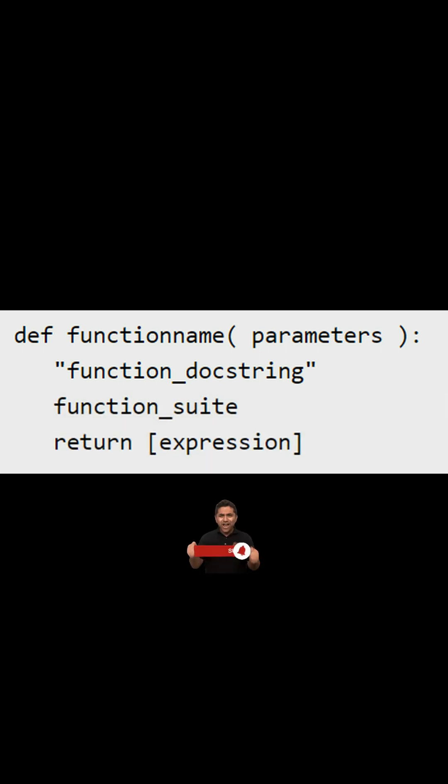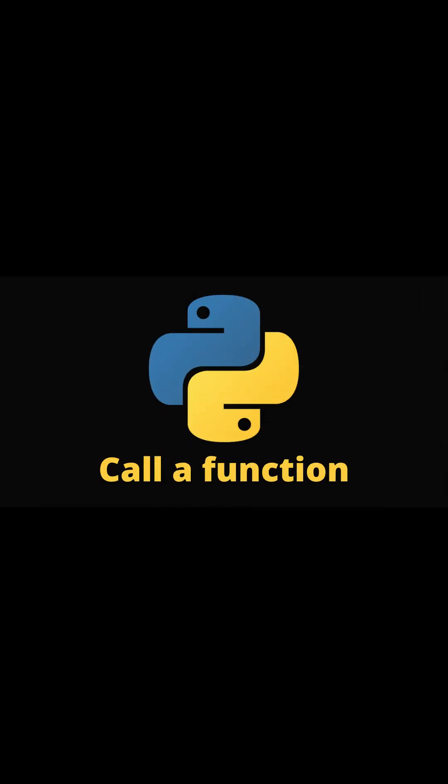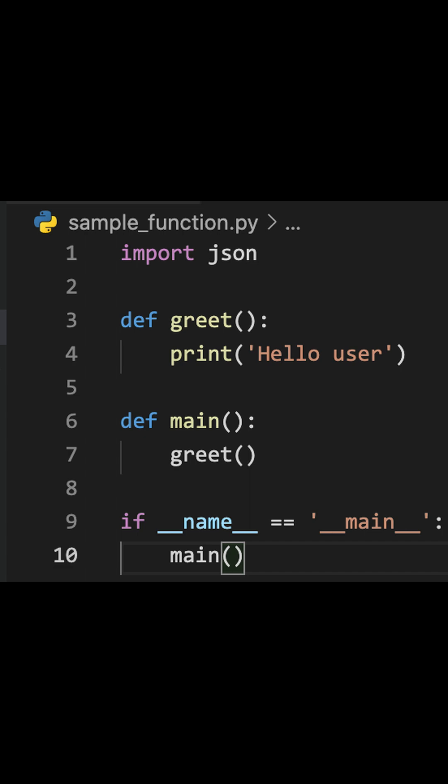The code block within every function starts with a colon and is indented. You can also call a function from another function or directly from a Python prompt.